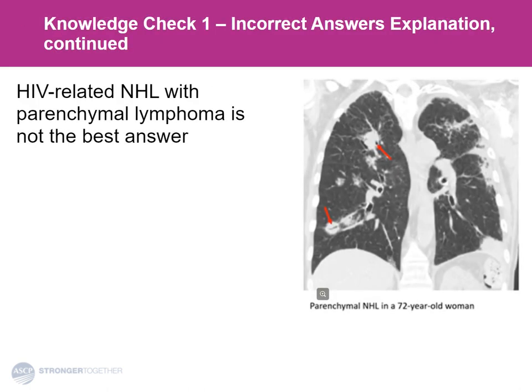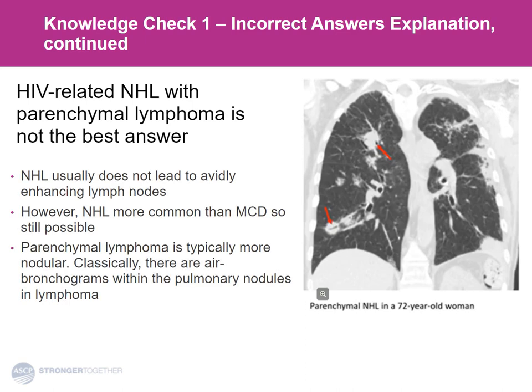The second answer you have to differentiate between is non-Hodgkin's lymphoma with parenchymal lymphoma. Parenchymal lymphoma is peribronchovascular, but it is more nodular — more of these very well-defined nodules. And often you will see classically air bronchograms or a bronchus that goes through these areas of nodularity. Based on the nodes alone, given that non-Hodgkin's lymphoma is just so much more common, it may just be an atypical look for non-Hodgkin's or a multicentric Castleman disease that degenerated. But the parenchymal findings — this is what lymphoma looks like, not like our Kaposi's sarcoma case.